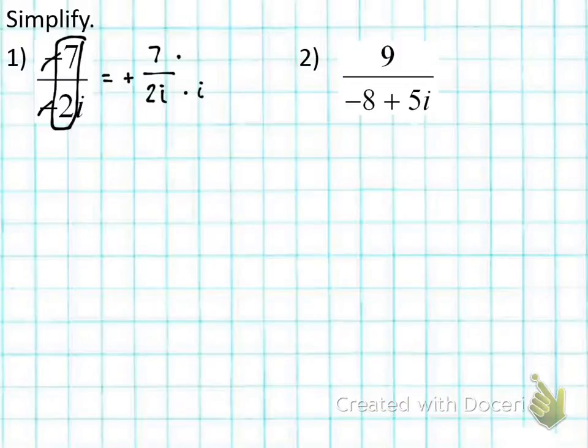A good way to think about it is we're rationalizing the denominator. Remember when we multiplied everything by the radical sign? Same type of concept. Okay, so working vertically now. 7 times i in the numerator is 7i. The denominator, we have 2 times i times i...